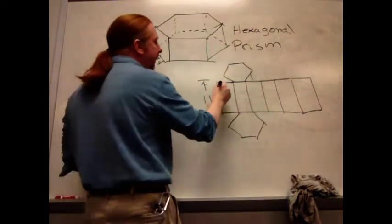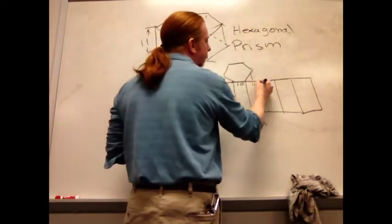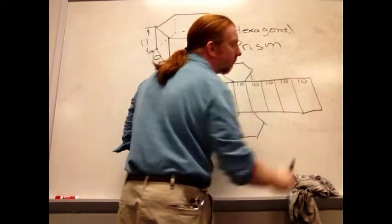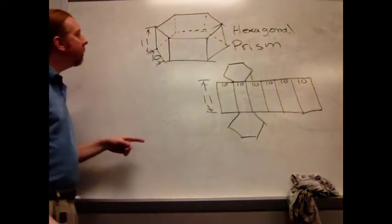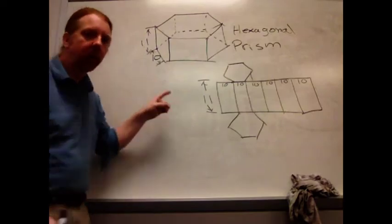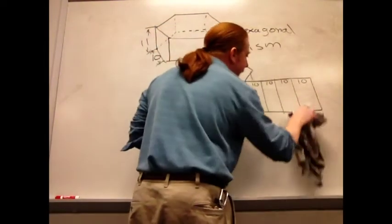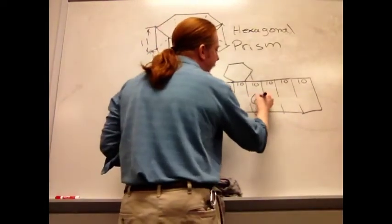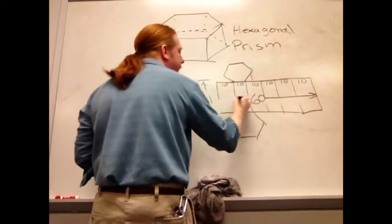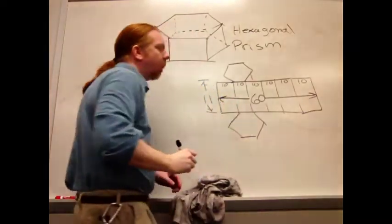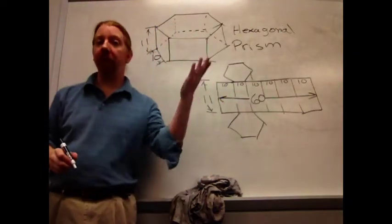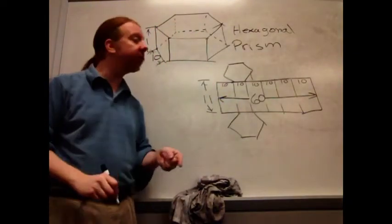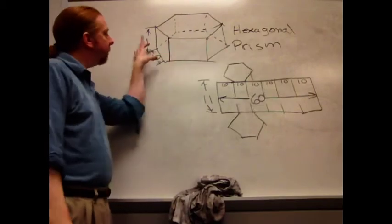Each of these pieces is 10 going across. So when I look at this, I can say, well, let's go ahead and just get one net area. So that means I've got 60 units all the way across. 60 would be 6 times 10. There are six areas, each one 10 units long.